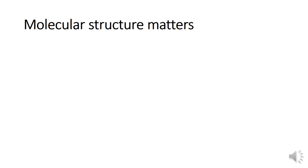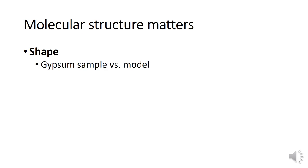Molecular structure matters, and we see that through the structure of solids — but we haven't talked about solids before. We've only talked about liquids in 106, and in 105 you spend a lot of time talking about gases. Through the example of gypsum, the shape of the molecular model predicted the shape of the macroscopic view, and strength is another way that molecular structure influences the actual material.